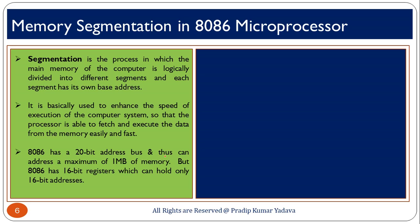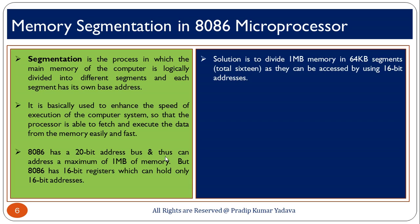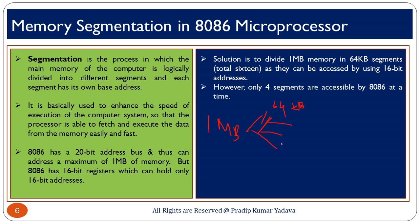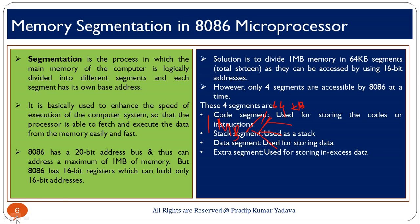But as you know, 8086 has 16-bit registers which can hold only a 16-bit address. To avoid all the confusion from this situation, 1 megabyte of memory is divided into 16 segments, each segment containing 64 KB. However, only 4 segments are accessible by 8086 at a time, and these segments are: code segment, stack segment, data segment, and extra segment.